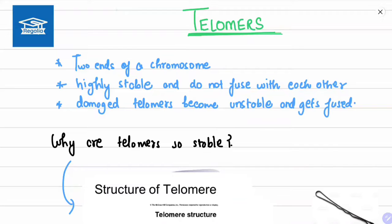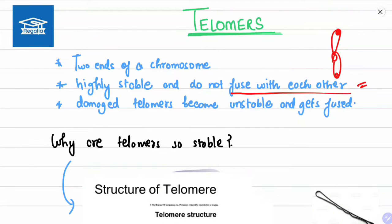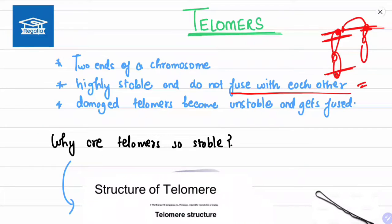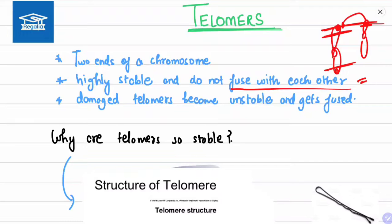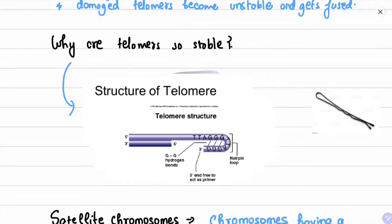Telomeres are the two ends of a chromosome. They are highly stable and do not fuse with each other. Damaged telomeres become unstable and can get fused. If a telomere is broken, the chromosome becomes unstable, and two chromosomes with broken telomeres have a tendency to fuse with each other because telomeres provide stability to chromosomes.